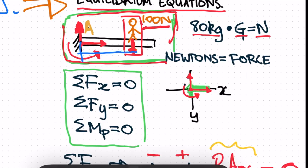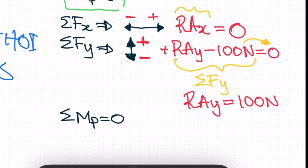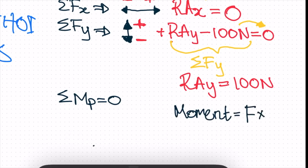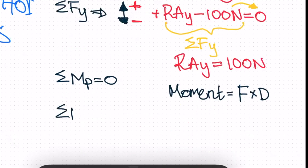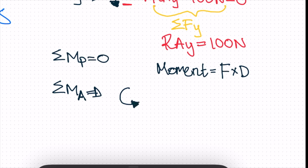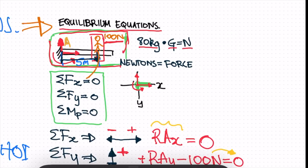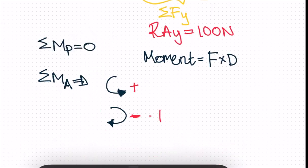Let's say this distance is 5 meters. Recall from physics: a moment equals force times distance, so our force is acting 5 meters from our point. For the sum of moments about A, anything in the anti-clockwise direction is positive and anything clockwise is negative. Our weight creates a moment in the clockwise (negative) direction, and our reaction moment MA acts to counter it. So: negative 100 newtons times 5 meters, plus MA, equals zero.